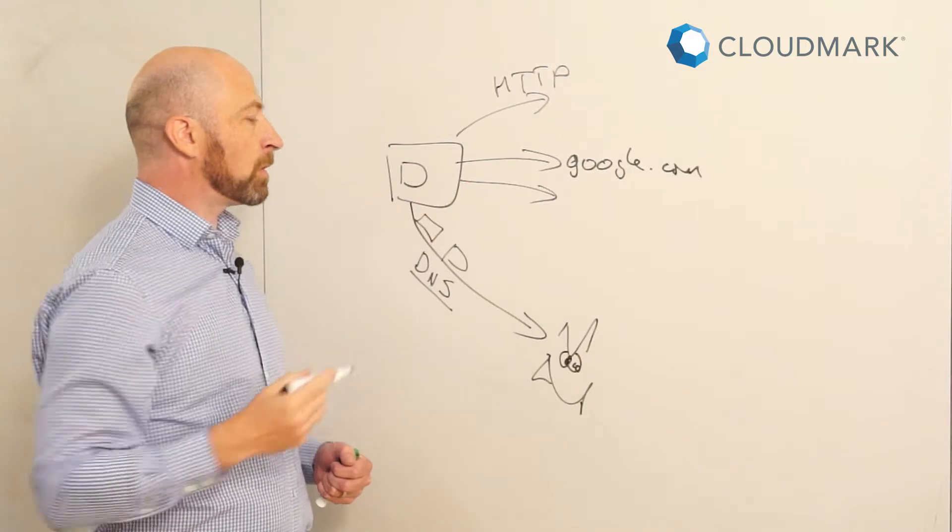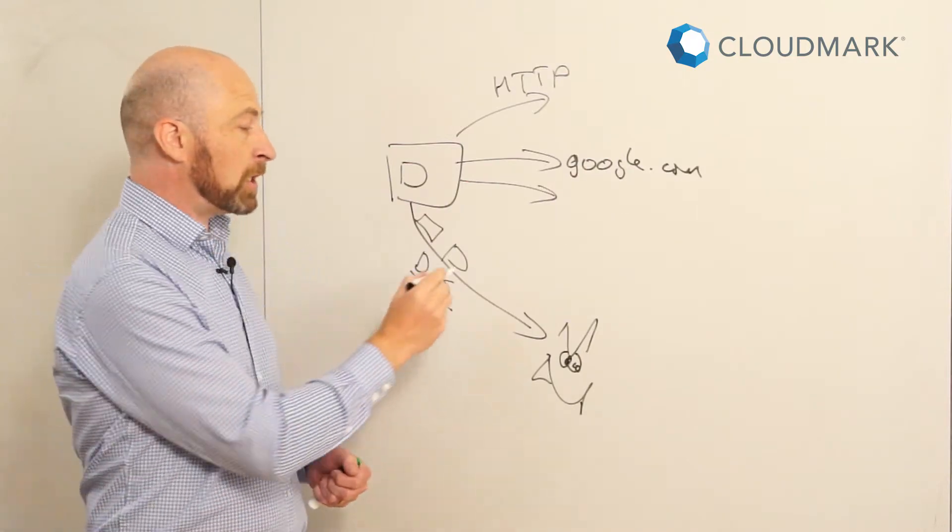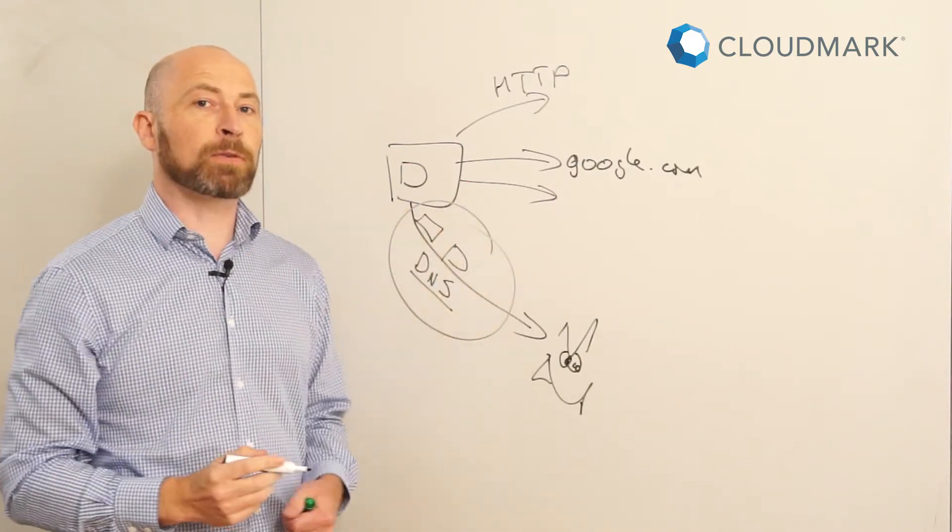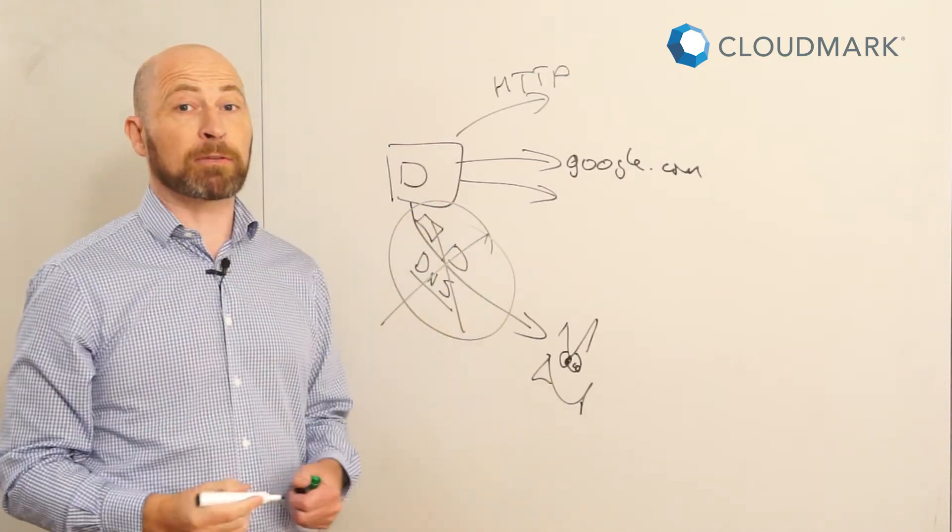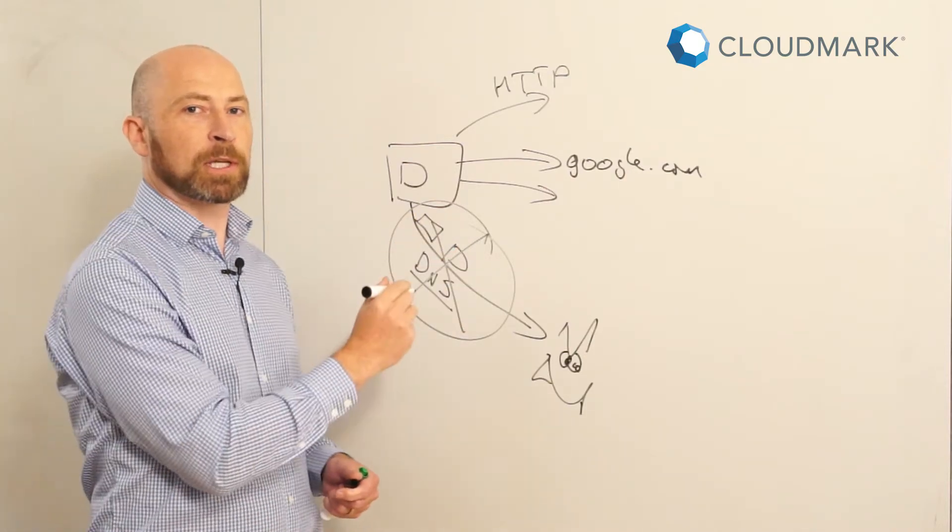If you get a solution such as that from Cloudmark, you can detect tunneling being used for exfiltration and stop that traffic from leaving your network and protect yourself.